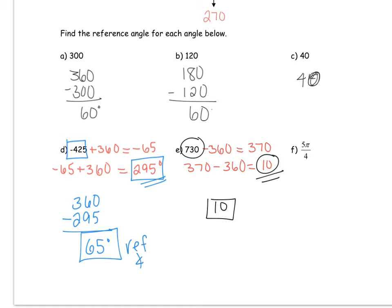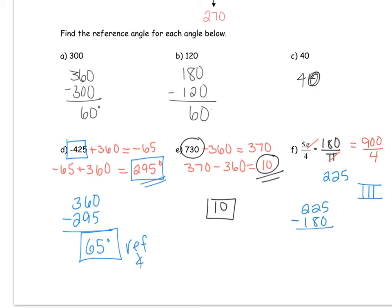Example F: find the reference angle for 5π/4. First convert to degrees by multiplying by 180 over pi — the pi's cancel. 5 times 180 gives 900, and dividing by 4 gives 225. To find the reference angle for 225, which is in quadrant three, we do 225 minus 180. Type that into the calculator and you get 45. That's the reference angle.